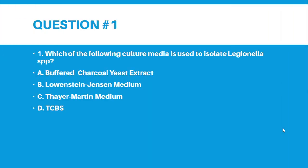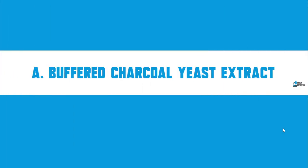Number 1. Which of the following culture media is used to isolate Legionella species? Letter A, Buffered Charcoal Yeast Extract. Letter B, Lowenstein Jensen Medium. Letter C, Thayer Martin Medium. Letter D, PCBS. And the correct answer for number 1 is letter A, Buffered Charcoal Yeast Extract.